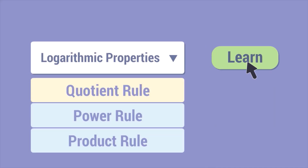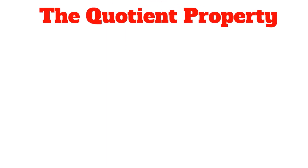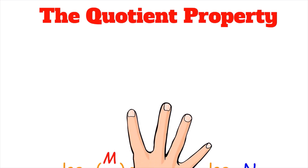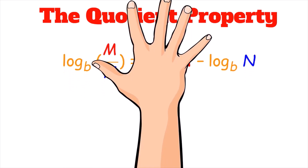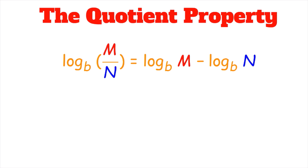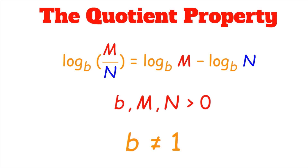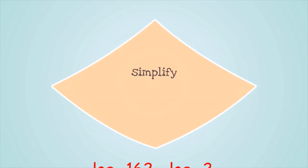The second type of logarithmic property we will look at today is the quotient rule. The quotient property states that log base B of M divided by N is equal to log base B of M minus log base B of N. Once again, we have the same domain restrictions: B, M, and N have to be greater than 0, and B is not allowed to equal 1.